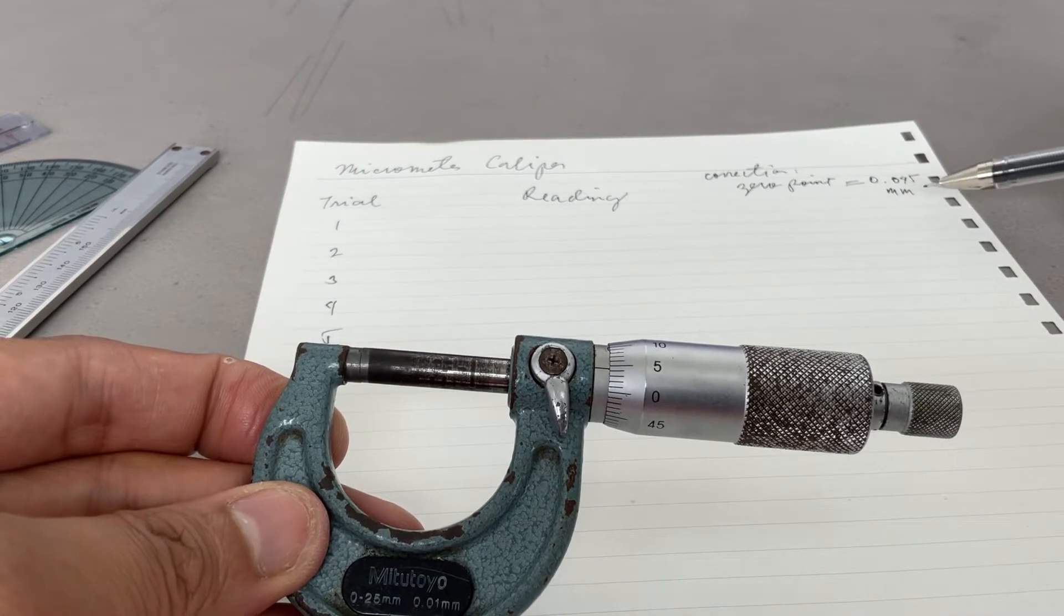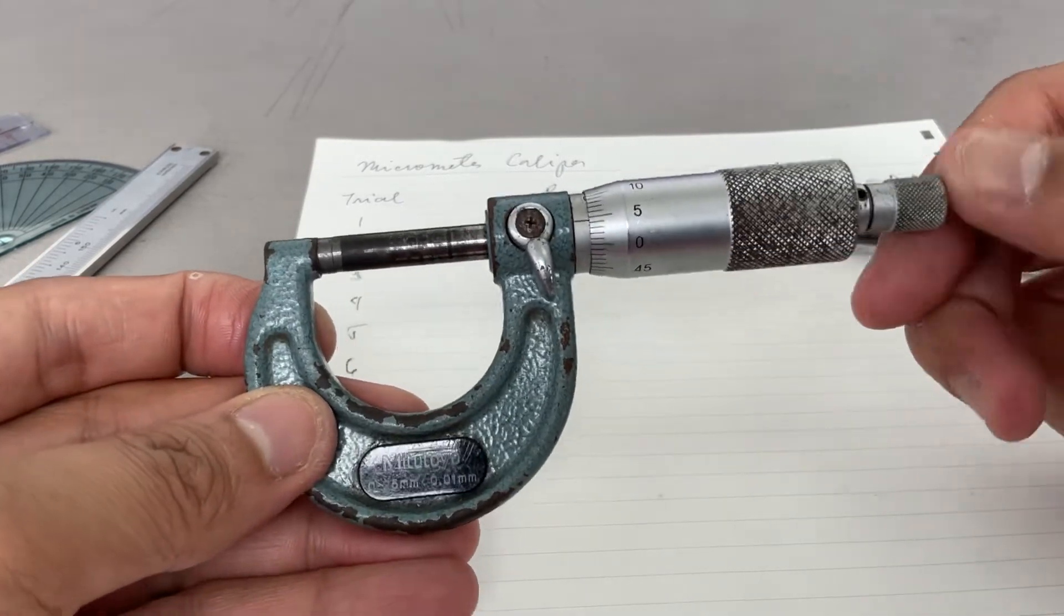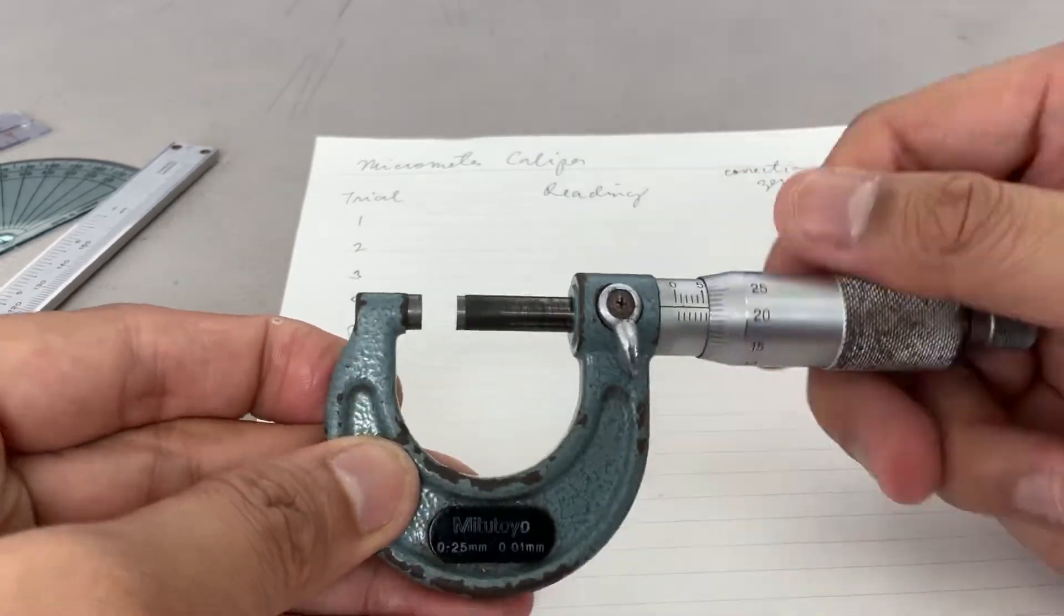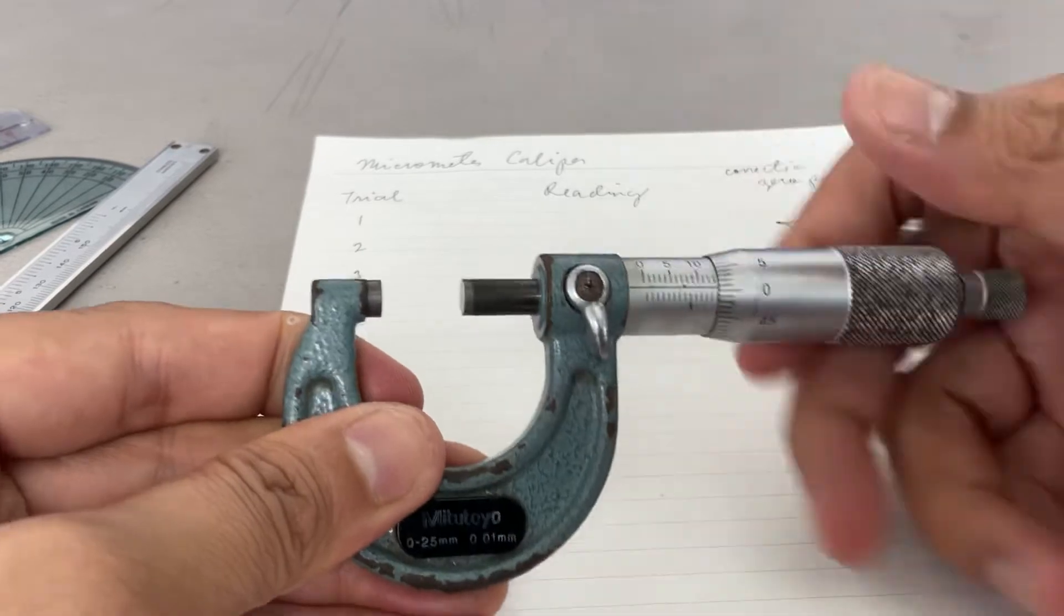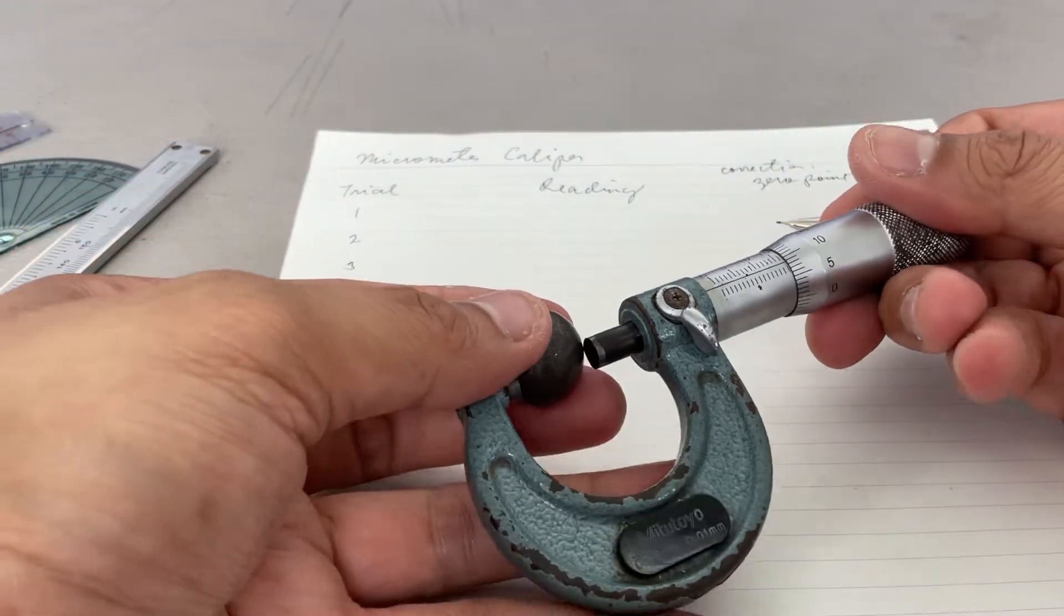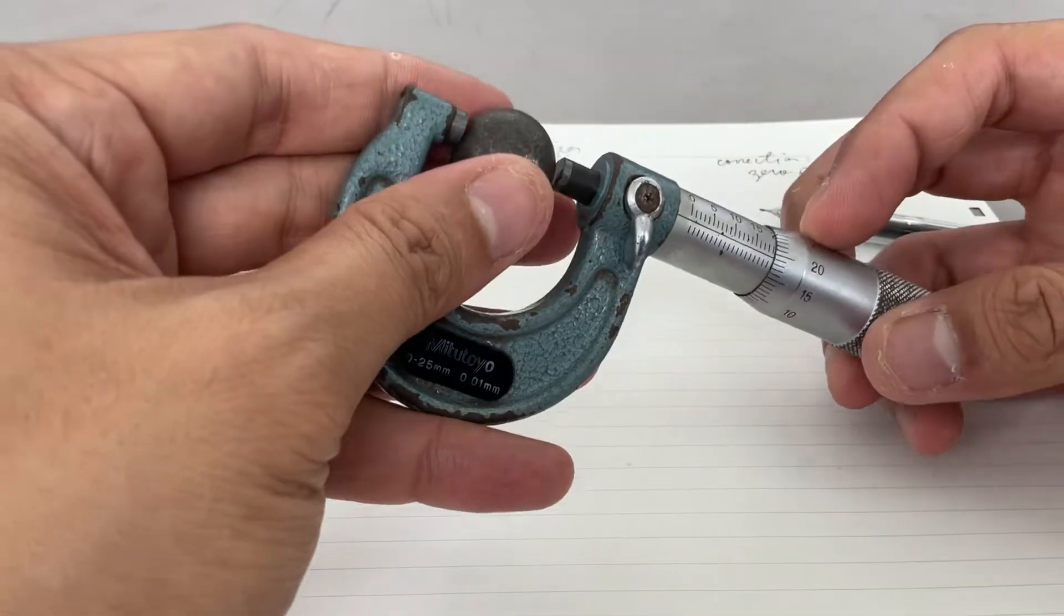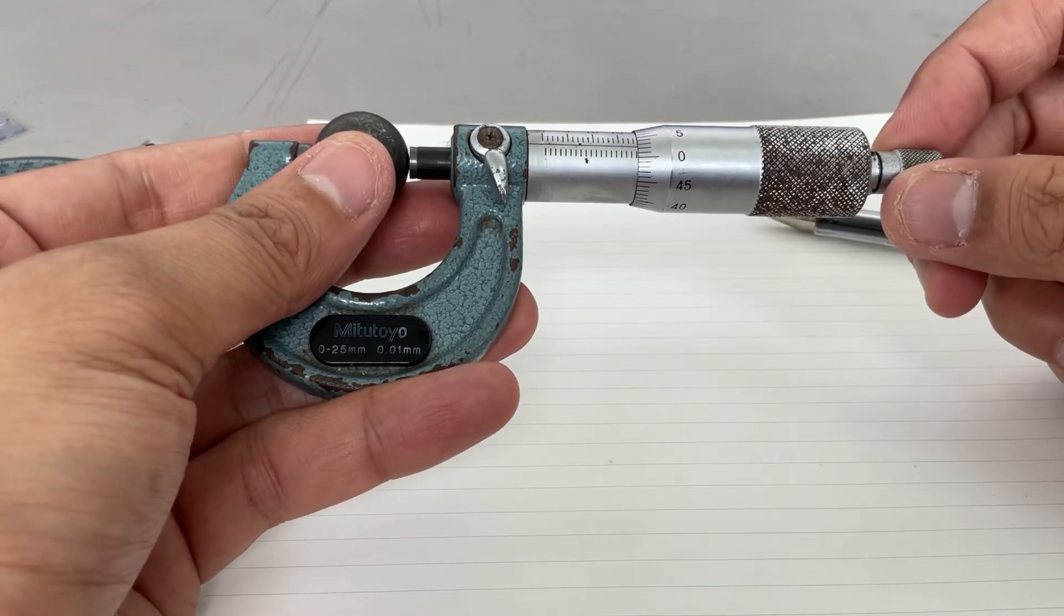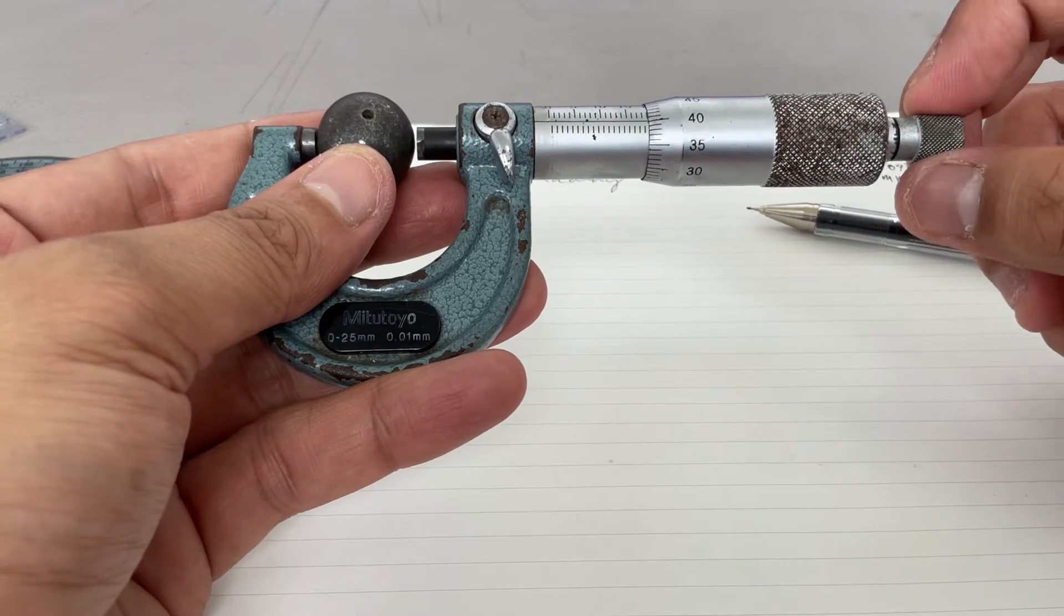So how do we use it? You unlock it and then open the anvil. You insert your object. When you're close, you use the ratchet. You hear one click - did you hear it? One click only.